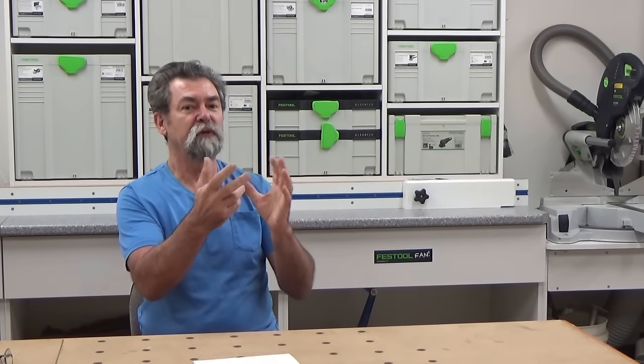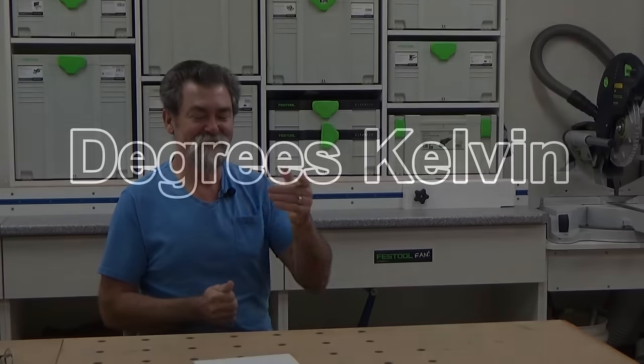So I'm getting around 1700 lumens per fitting and I'll go into all of that and cool white that's displayed in degrees Kelvin. It sounds complicated but it's pretty easy. Here we go.